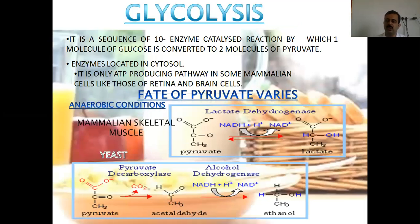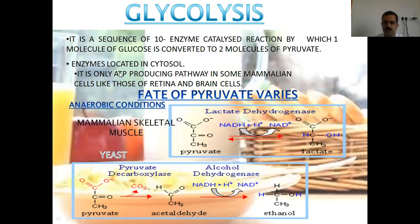Glycolysis — the EMP pathway — is a sequence of 10 enzyme-catalyzed reactions by which one molecule of glucose is converted into two molecules of pyruvate. With the help of 10 enzymes, one single molecule of glucose gets converted into two molecules of pyruvate. The enzymes are located in the cytosol. It is the only ATP-producing pathway in some mammalian cells.